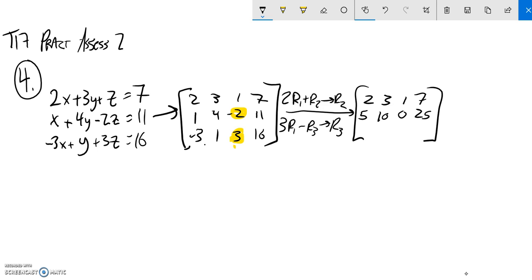3 times the first row minus the third row. So, I'll just scratch it up here. 2 times 3, 3 times 3, 1 times 3, 7 times 3.